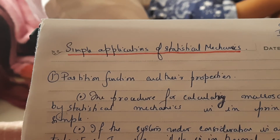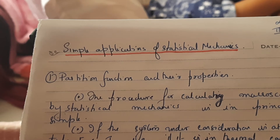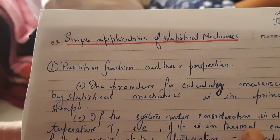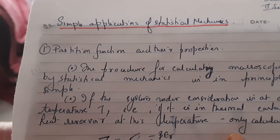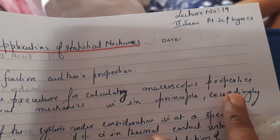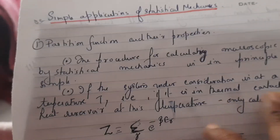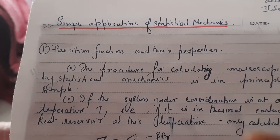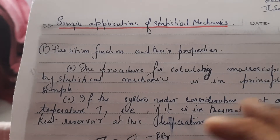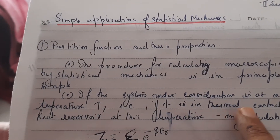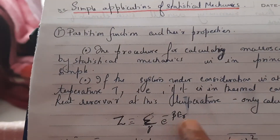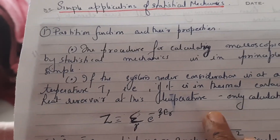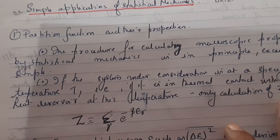Today's topic is simple applications of statistical mechanics. Before going to the applications, you should know about the partition function, which we have already covered. Here we can see what we can do using the partition function. The procedure for calculating macroscopic properties by statistical mechanics is in principle exceedingly simple. If the system under consideration is at a specified temperature T, only calculation of Z is required to know many properties of the system.